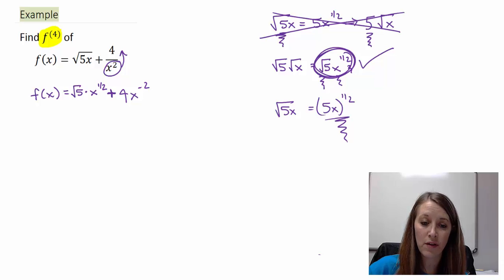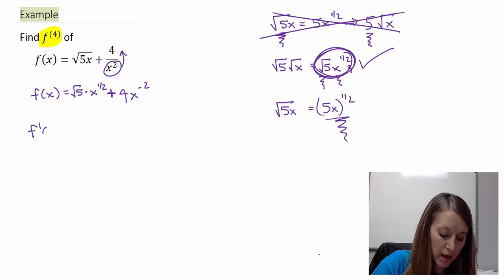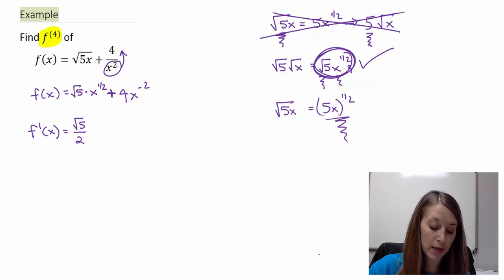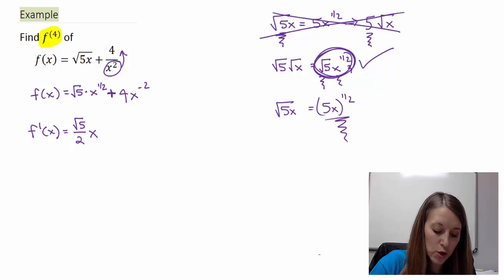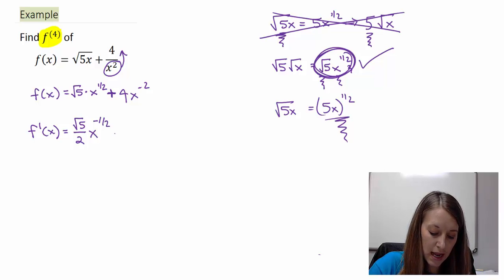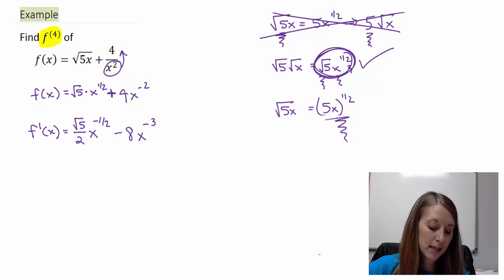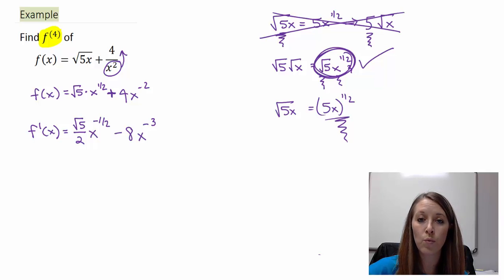Now I can start taking the derivative of these pieces. For the first derivative, f prime of x: bring the power down, keep square root of 5, and divide by 2 — so square root of 5 over 2 — then x to the negative one-half (since one-half minus one equals negative one-half). For the second term: 4 times negative 2 gives negative 8x, and subtracting the power gives x to the negative 3. That's my first derivative. This doesn't really simplify, so I'll keep it as is.